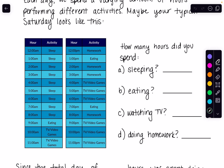Thinking about a typical 24-hour period, this chart shows someone's Saturday broken down into sleeping, eating, homework, and entertainment like watching TV and video games. Starting with sleeping, we have nine hours. Moving on to eating, we have three hours. For watching TV or playing video games, that's eight hours. And doing homework is four hours. This gives us a decent visual of where most of our time went.